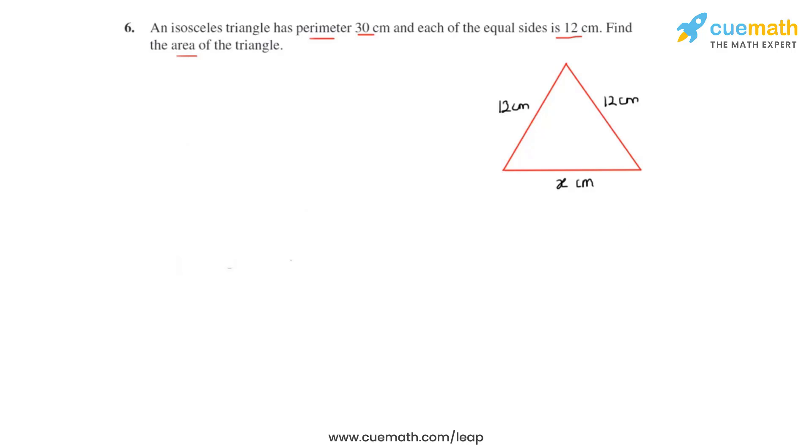Now we can find the area of this triangle by Heron's formula, for which we should know the value of x first. So let's find that. For that, we first write the perimeter of the given triangle to be equal to 30 centimeters as given in the question.